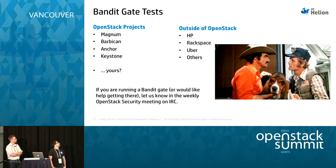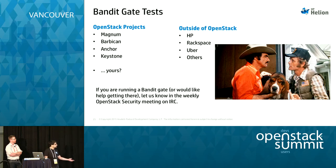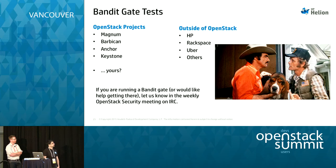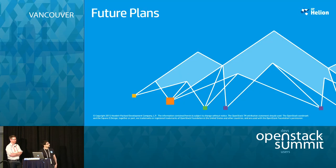Who's using Bandit at the moment? We know for sure that Magnum, Barbican, Anchor, and Keystone are all using Bandit in their gate tests — that might be as an experimental gate or a non-voting gate. Outside of OpenStack, HP are using it because we are, Rackspace are using it, and Uber are using it, which is pretty cool, and probably others. It's out on PyPI, you can download it and run it. If you are using Bandit or want to use it, feel free to contact us — you can jump into the OpenStack security project meetings we have weekly on IRC, or grab us at the end of this talk.